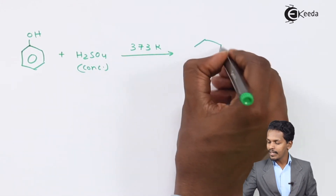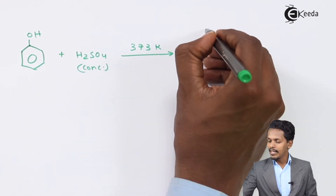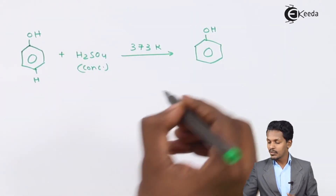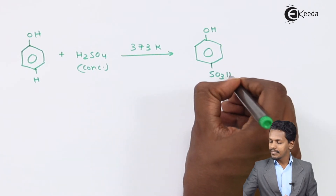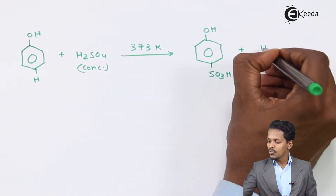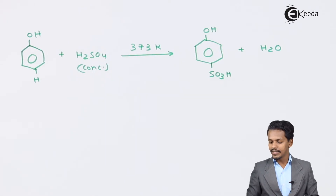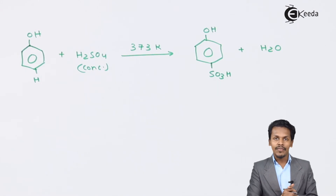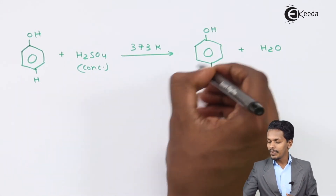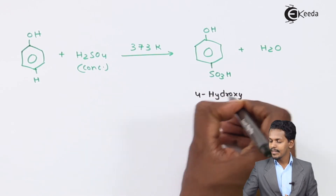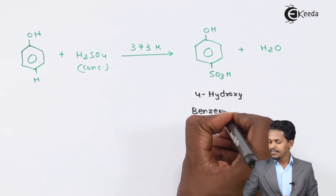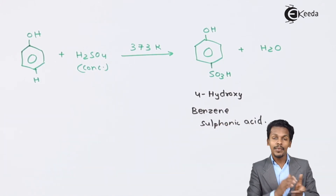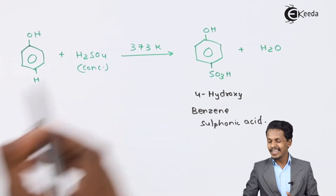At 373 Kelvin, a substitution reaction occurs where the OH group remains as it is, while the hydrogen at the para position is replaced by SO₃H, with H₂O as a by-product. The product obtained is 4-hydroxybenzene sulfonic acid — a different product compared to the room temperature reaction, depending solely on the temperature.